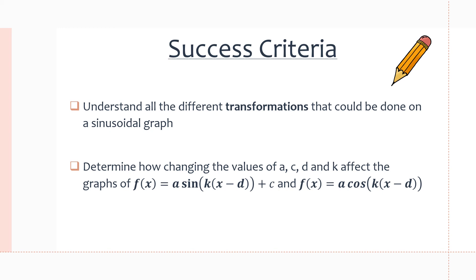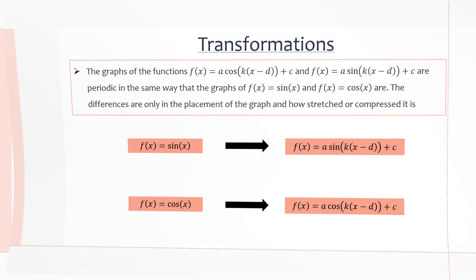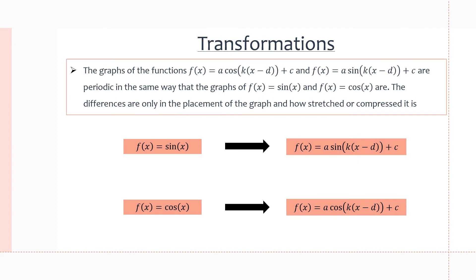These transformations with a, c, d, and k — we'll go over each one and see how it affects the graph. These functions f(x) = a·cos(k(x − d)) + c and the same with sine are periodic, just as f(x) = sin(x) and f(x) = cos(x) are. The differences between them is where the graph is placed and how stretched or compressed it is, which comes from the four parameters a, k, d, and c, which we'll go over in the coming slides.